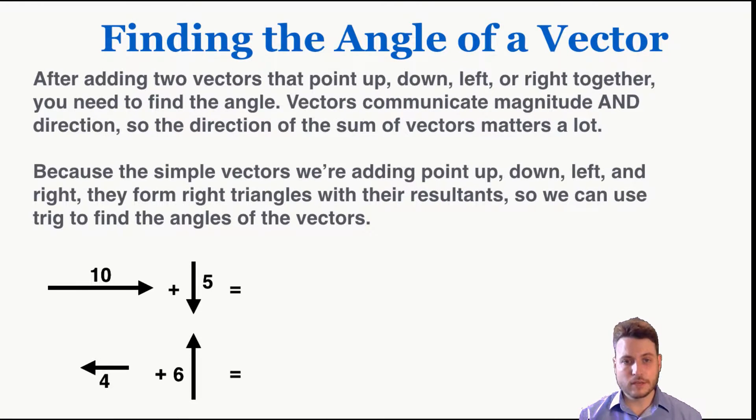So I'll show you an example of using trig on this first sum. I can see I have 10 to the right, 5 down, so I combine them tip to tail like this, draw that new connecting vector, and using the Pythagorean theorem I see that it's 11.2. And I remember the convention for vectors is to try to find the angle between the vector and the horizontal line like this.